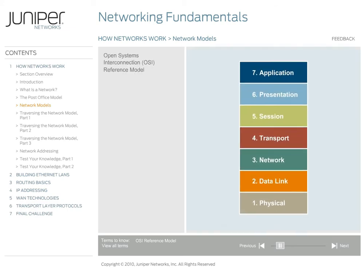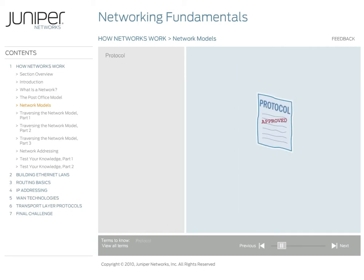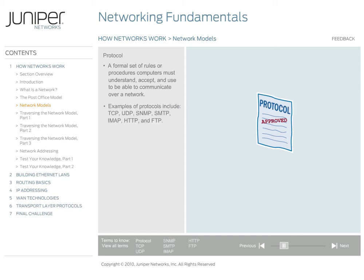The OSI model, however, provides only guidelines on how computers communicate over a network. It does not provide detailed procedures on how to actually make this communication happen. These procedures for communication are called protocols and define how actual communication occurs. A protocol is a formal set of written rules or procedures that computers must understand, accept, and use to be able to talk to each other over a network. Different protocols are used at different layers of the reference model.